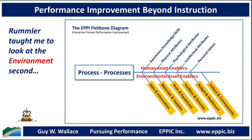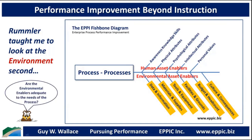What I also learned from Rumler is: second, don't look at the human — look at the environment. My framework for looking at the environment focuses on: are the consequences driving the wrong kinds of behaviors? Consequences were a big deal to him. I see culture and consequences as bundled together. I look to see what's involved in the environment and whether it's adequate to the needs of the processes. Are the environmental enablers adequate? Do the people who need sharp saws have sharp saws — to borrow something from Covey? Either they do or they don't; either we have things that are adequate to the needs of the process.